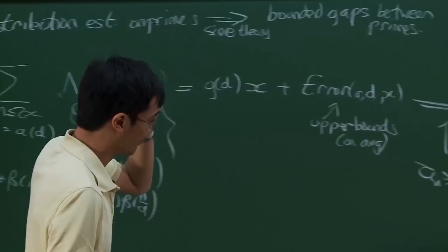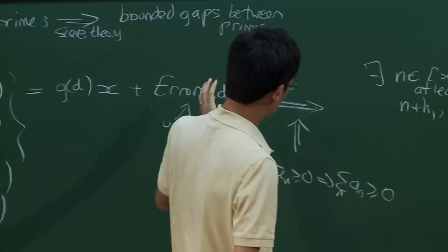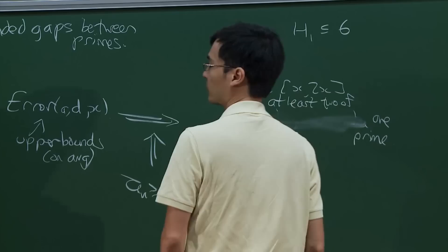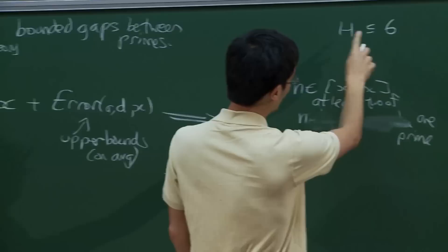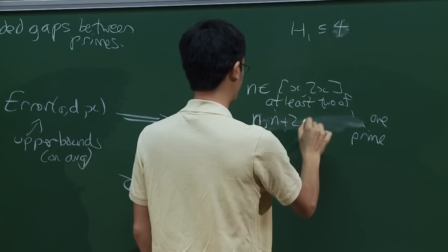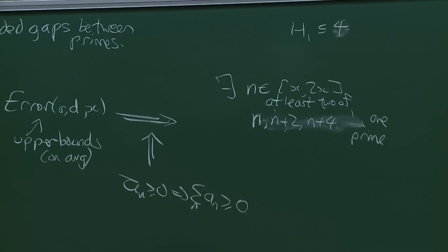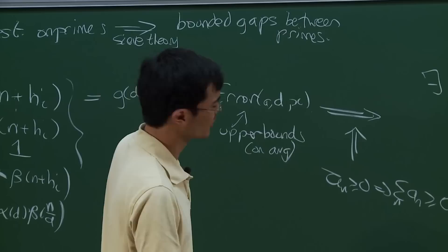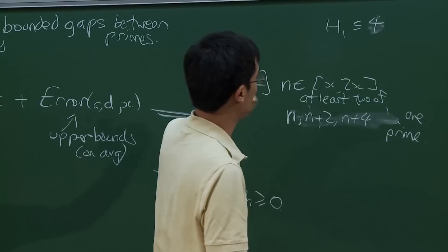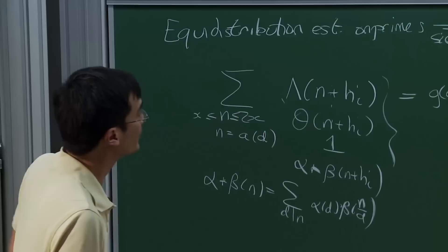I sketched how this argument worked last time. One can hope to use this to prove other things. We saw last time that if you assume the best possible equidistribution estimates, the generalized Elliott-Halberstam conjecture, then you can get the bounded gap between primes to be at most six. So maybe you can improve this even further—two is the optimal, but maybe just be slightly less ambitious and shoot for four. Can we use sieve theory to show that you can find a pair of primes of distance four apart or less? Unfortunately, the answer is no.